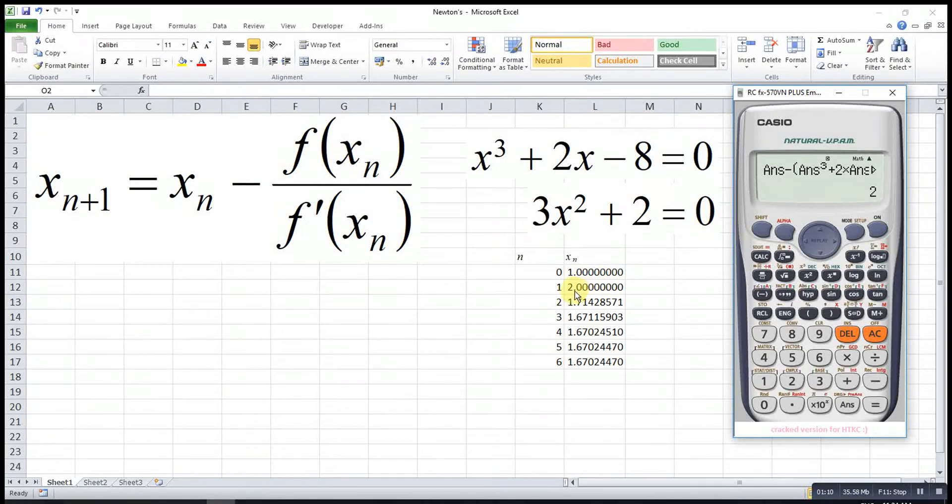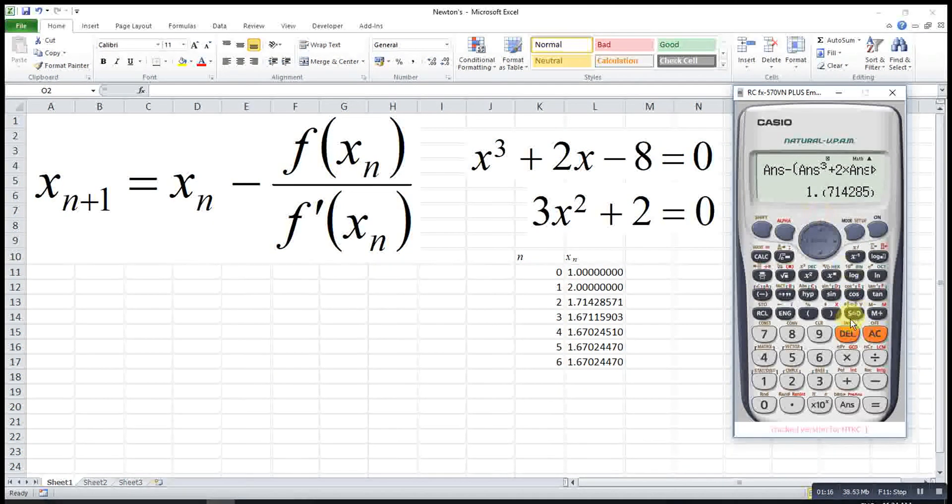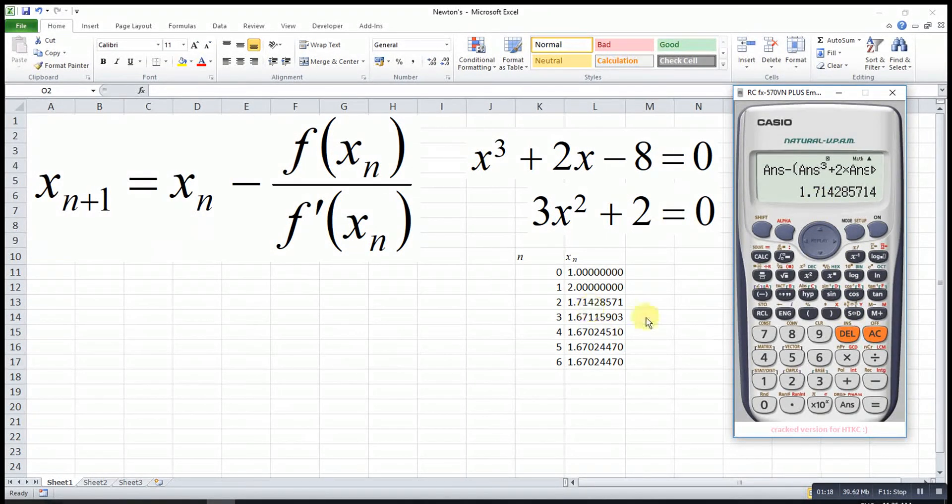So the next approximation is 2, then we press equal again. So this one will be the value. Then enter. So the value. Then equal. Equal.